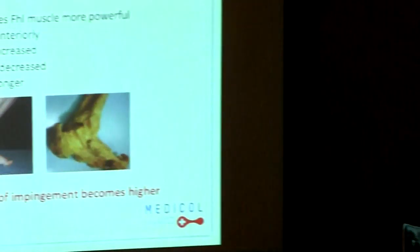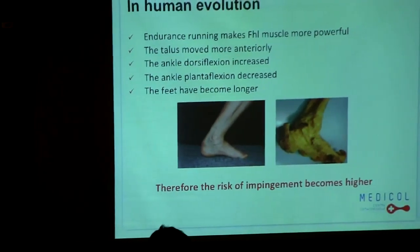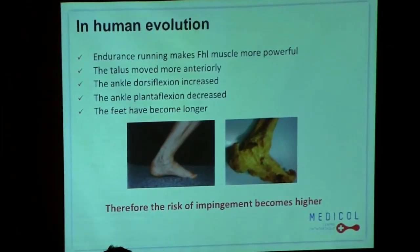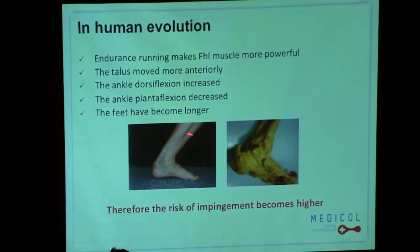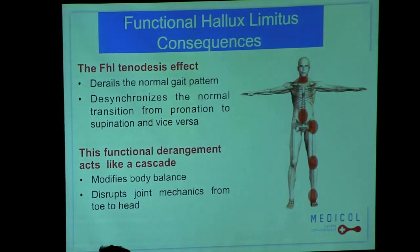In human evolution, we observe many changes. Endurance running makes the flexor hallux longus more powerful and bigger, so the belly of the muscle is more and more developed. The talus moves more anteriorly, the ankle dorsiflexes more, and in parallel plantar flexion decreases. The feet have become longer, and all these factors make the risk of impingement higher. That is probably why we observe this condition more frequently today.